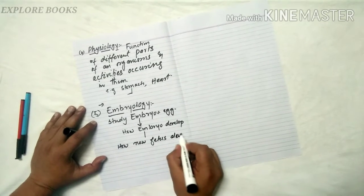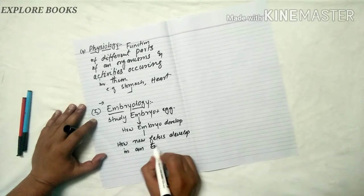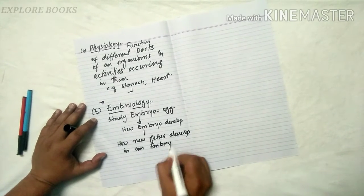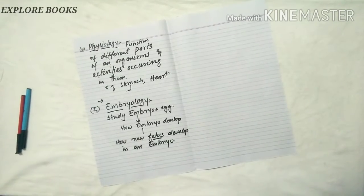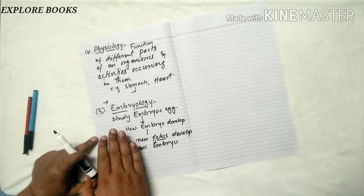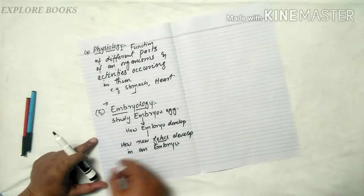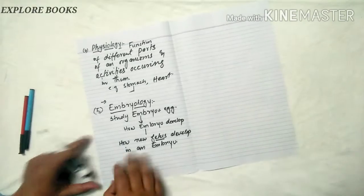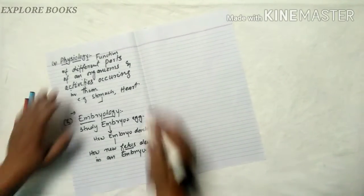How new features develop in an embryo. Study of embryo, how embryo is developed and how new features are developed inside the embryo. Number six is taxonomy.